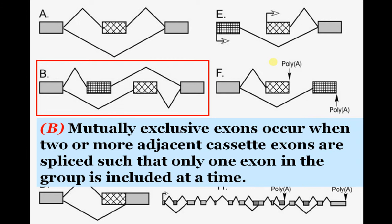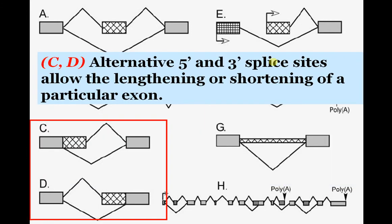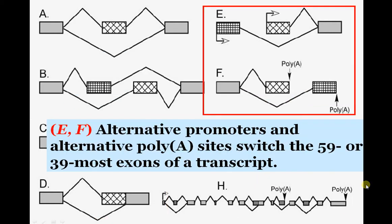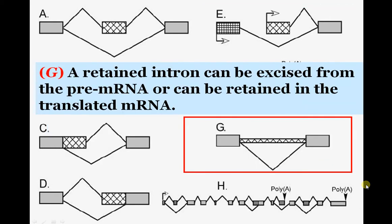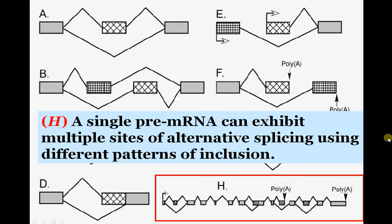Mutually exclusive exons occur when two or more alternative exons are spliced such that only one exon in the group is included at a time. Alternative 5' splice sites allow the lengthening or shortening of a particular exon. Alternative promoters and alternative poly-A sites switch the 5' or 3' most exons of a transcript, while intron retention retains the intron in the translated mRNA. A single pre-mRNA can exhibit multiple sites of alternative splicing with different patterns of inclusion.